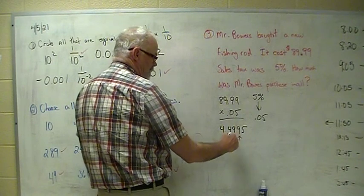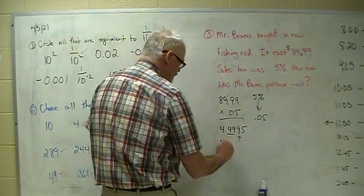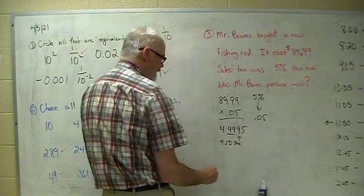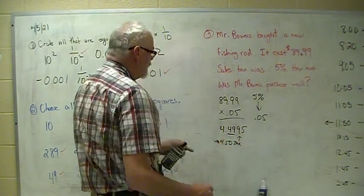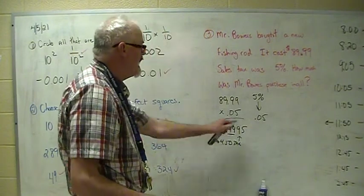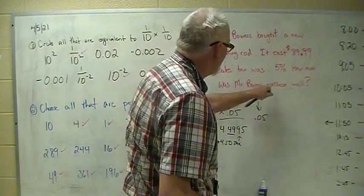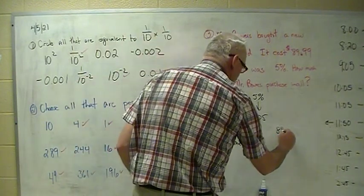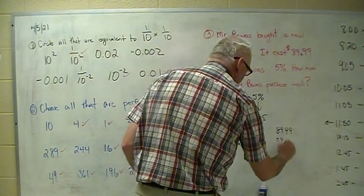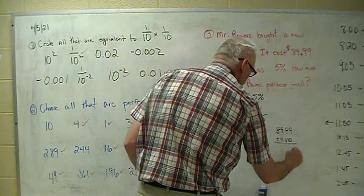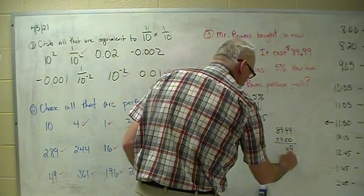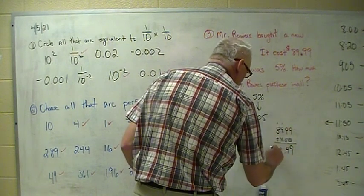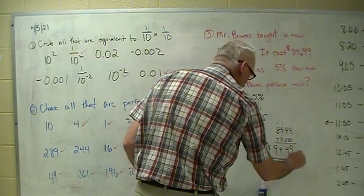All right, so that's my tax. The question says, how much was Mr. Bowers' purchase in all? So I gotta pay for the fishing rod plus the tax. Nine plus zero is nine, nine plus five is fourteen, carry the one. $94.49.